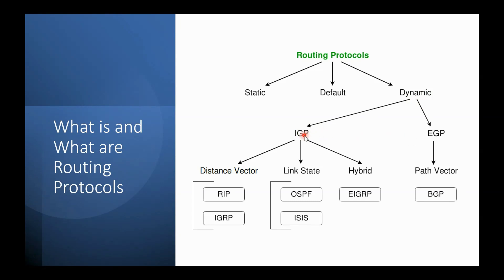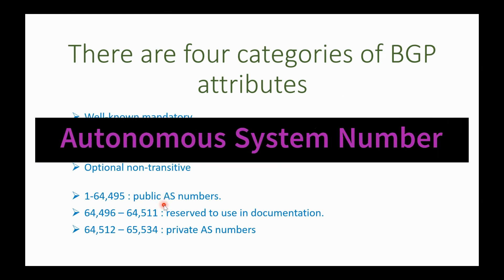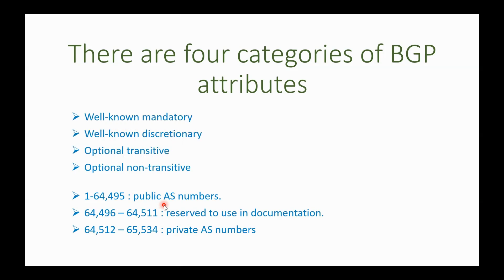Under dynamic routing, we have two categories: IGP (Interior Gateway Protocol) and EGP (Exterior Gateway Protocol). To understand the difference, we first need to know about AS (Autonomous System) numbers. Similar to how we have public and private IP addresses, AS numbers also have public and private ranges. Private AS numbers are used within an organization; public AS numbers are used for internet or WAN connectivity.